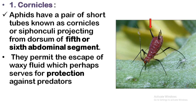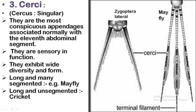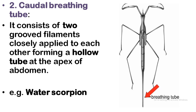The caudal breathing tube consists of two grooved filaments closely applied to each other, forming a hollow tube at the apex of the abdomen of the water scorpion. This tube helps in breathing — whenever the water scorpion comes to the surface, it breathes the gases through this tube.